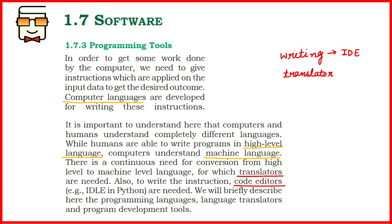The other kind of programming tools are translators. Once you have written any program or code, it needs to be converted from the language in which you coded into a language that can be understood by the computer. So these tools — which either help us in programming or converting code into a form understandable by the computer — are referred to as programming tools.